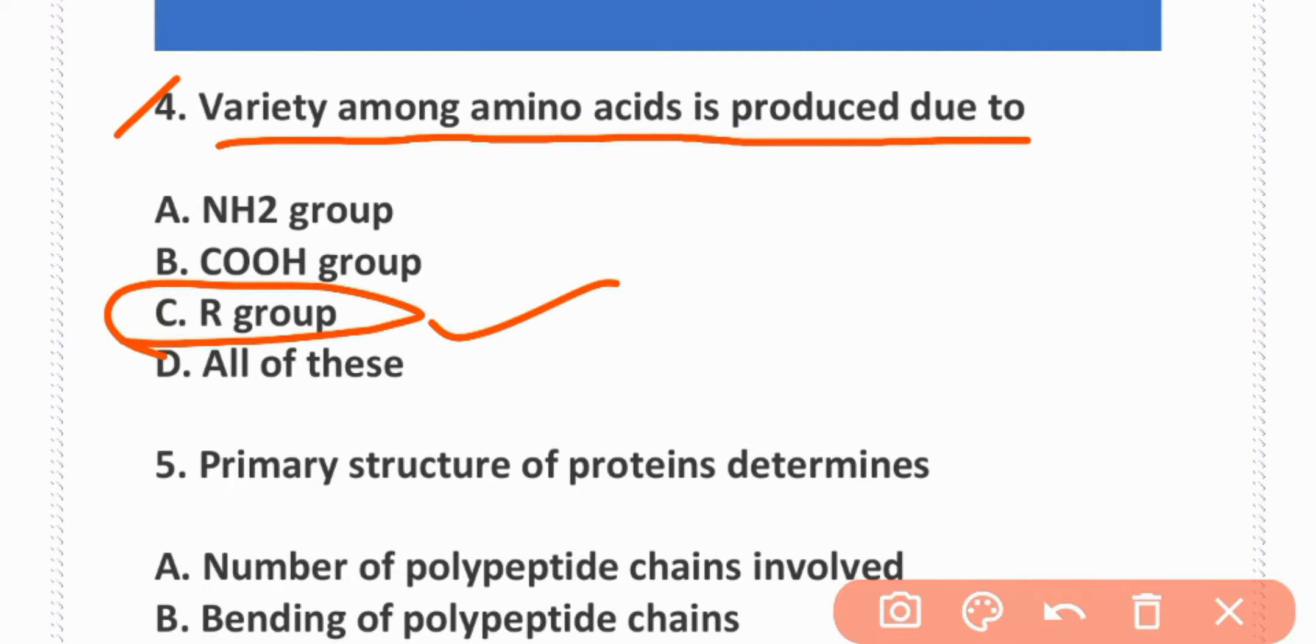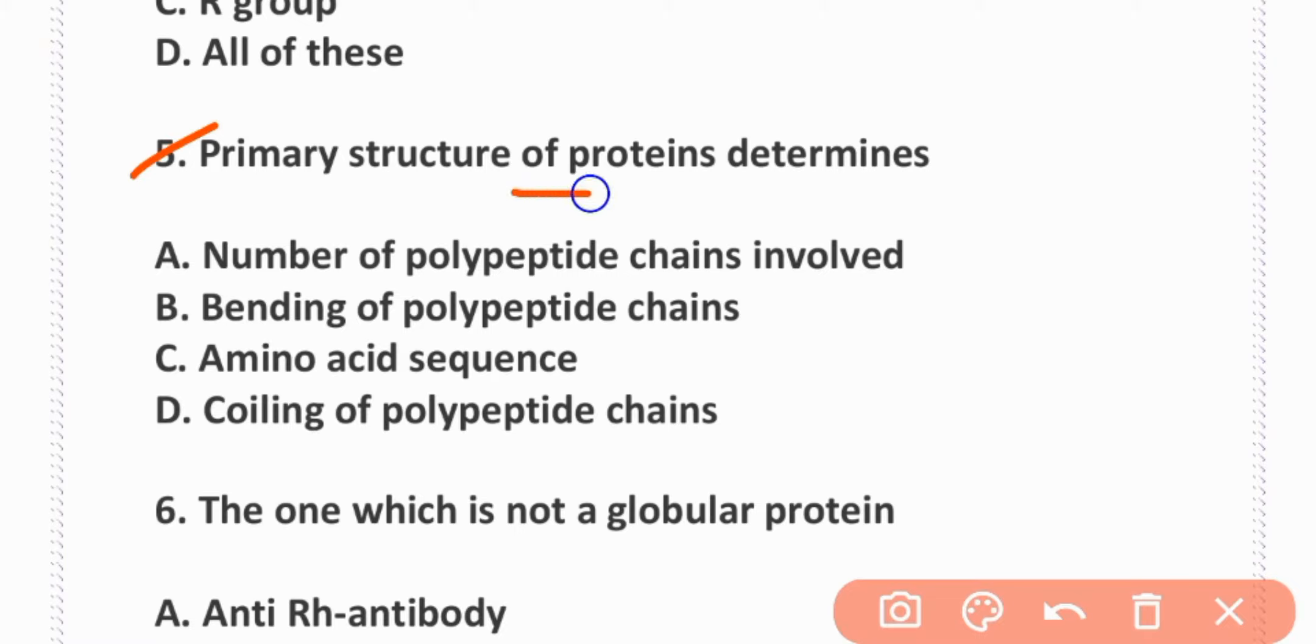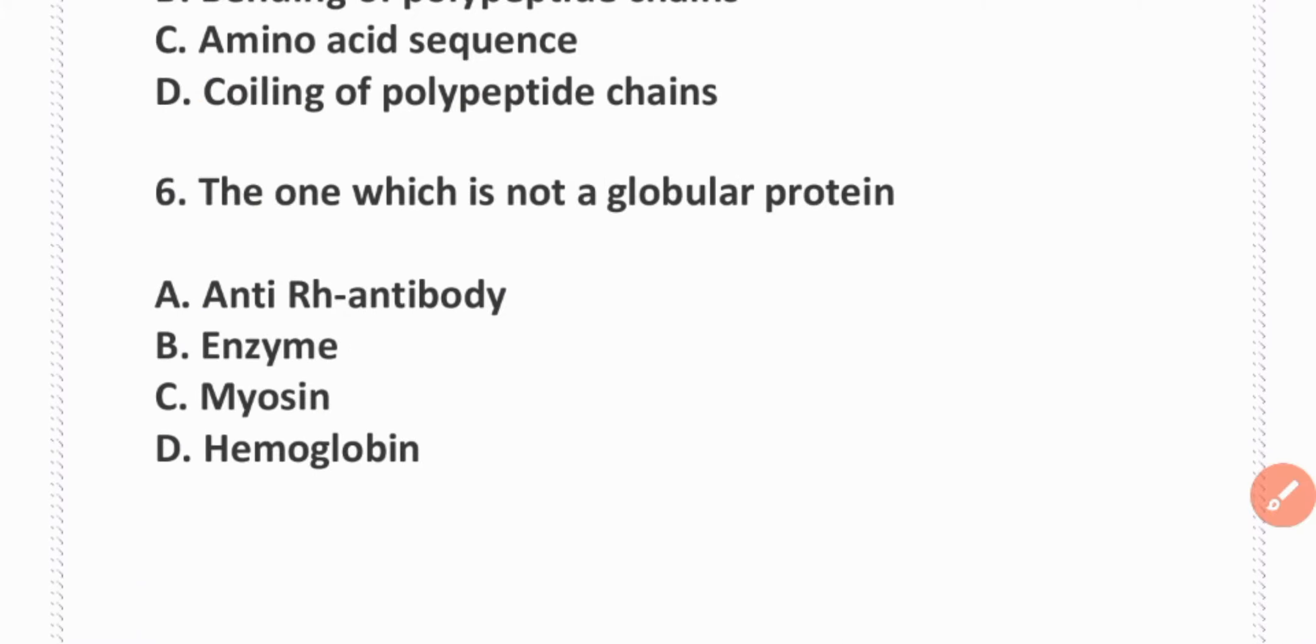Option C is correct. Primary structure of protein determines amino acid sequence. Option C is correct. The one which is not a globular protein is myosin.